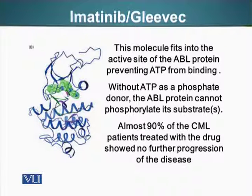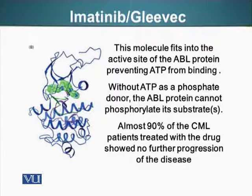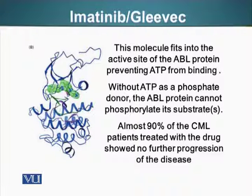If this protein cannot bind ATP, it will not be able to transfer a phosphate group to its target substrate protein and relay the signal forward. So it is a beautiful example of how people came up with a simple drug that fits in an enzyme simulated by receptor tyrosine kinases and causes cells to divide.